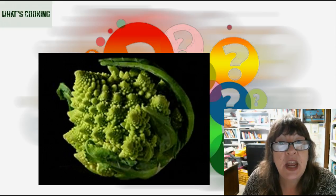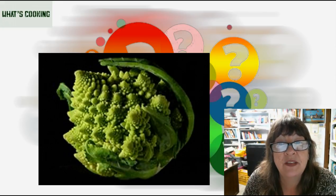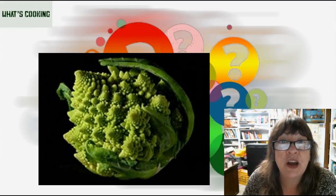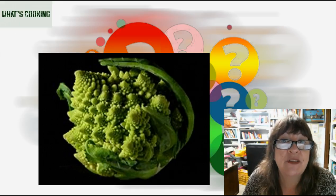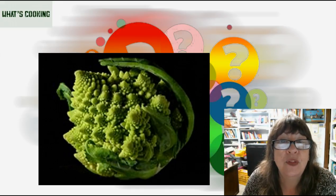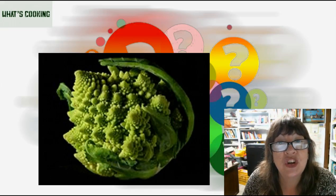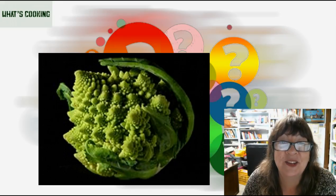Interestingly, the number of spirals on the head of Romanesco is a Fibonacci number. Romanesco is rich in vitamin C, vitamin K, dietary fiber, and carotenoids. All that to say, it is very satisfying both nutritionally and mathematically, which makes me smile.